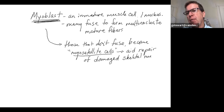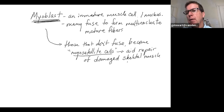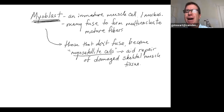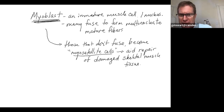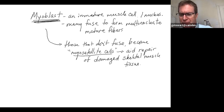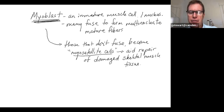Not all myoblasts - not all immature muscle cells - fuse to form mature muscle fibers. Those that don't fuse become myosatellite cells. Myosatellite cells then act in the aid of muscle tissue repair. When muscle fibers get damaged from trauma or injury, myosatellite cells, which were derived from myoblasts, aid in repair of damaged skeletal muscle tissue. Note that skeletal muscle tissue is not super repairable, even though it has high vascularization and innervation - it's on the lower end of repairability compared to other tissues.